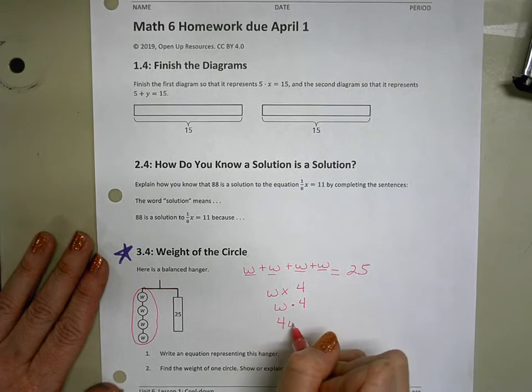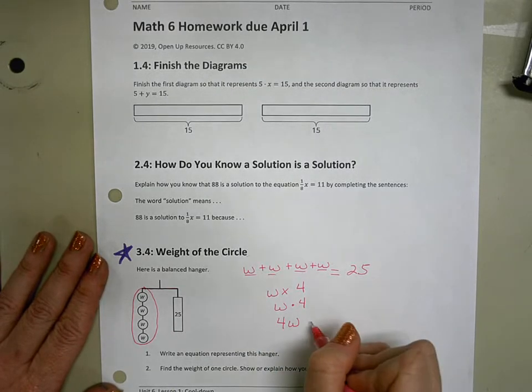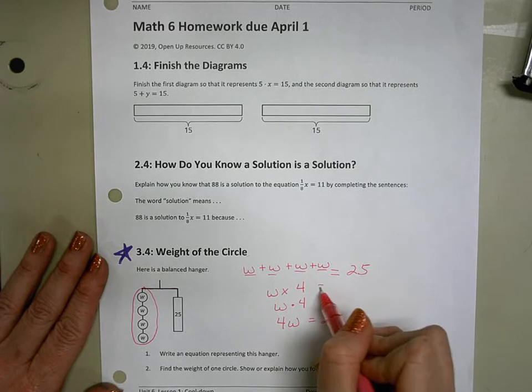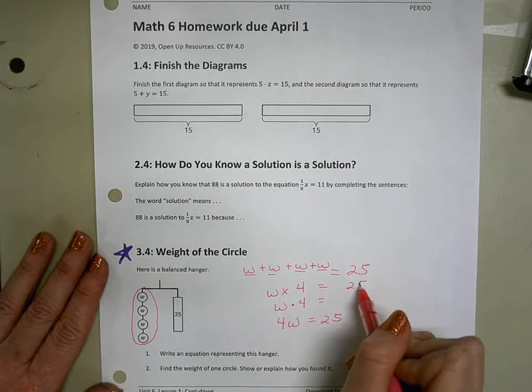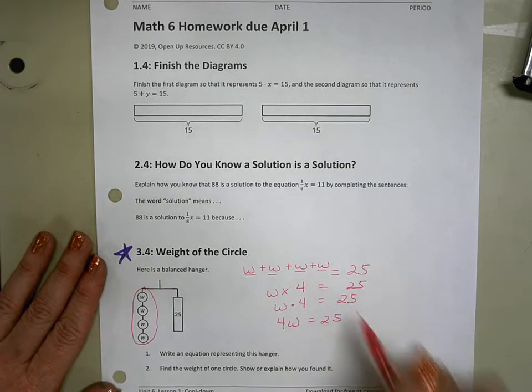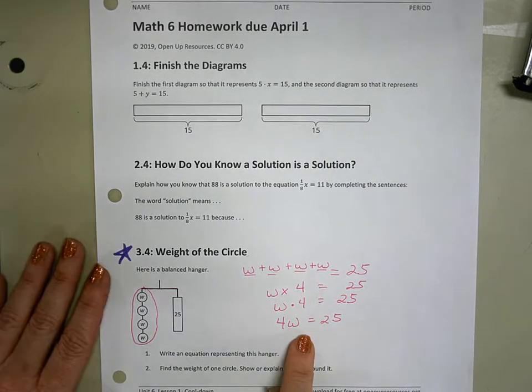We see four W's. Four W equals 25. All of these are fine equations. But algebraically, the best one and the simplest one is this last one.